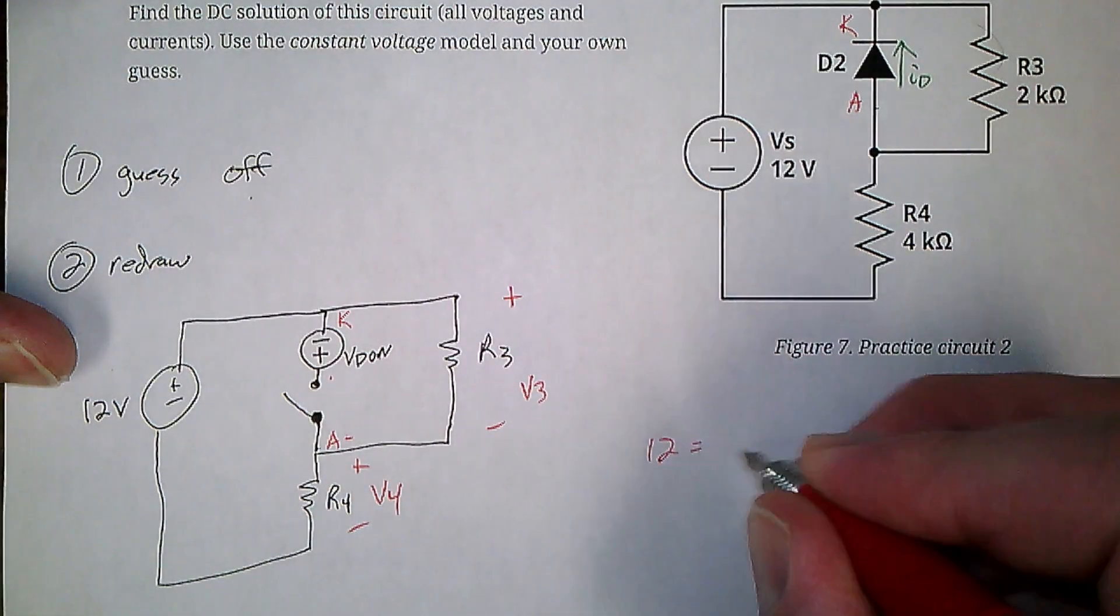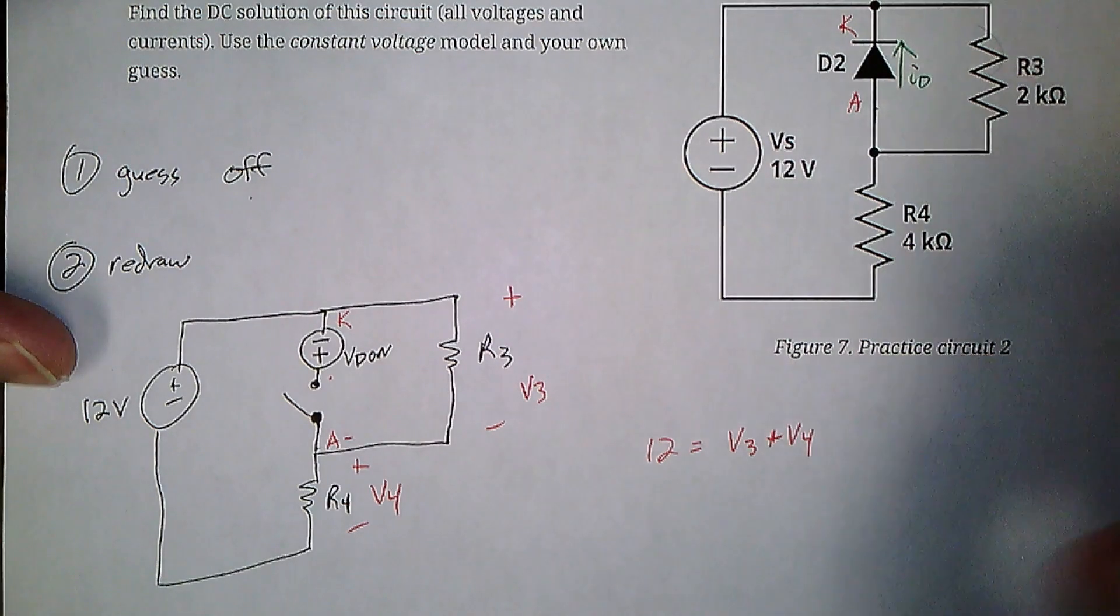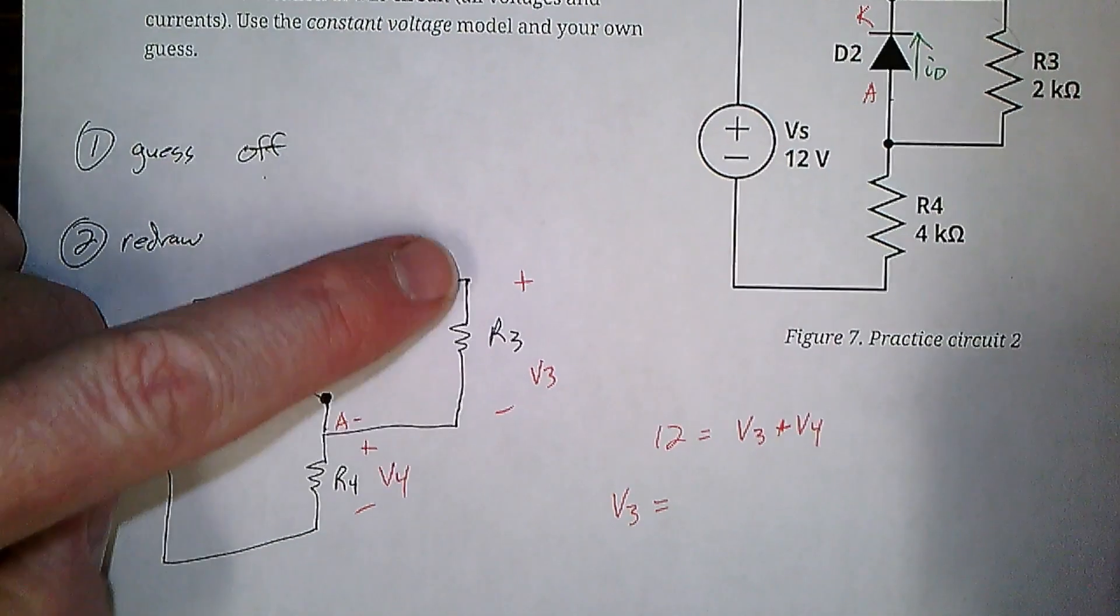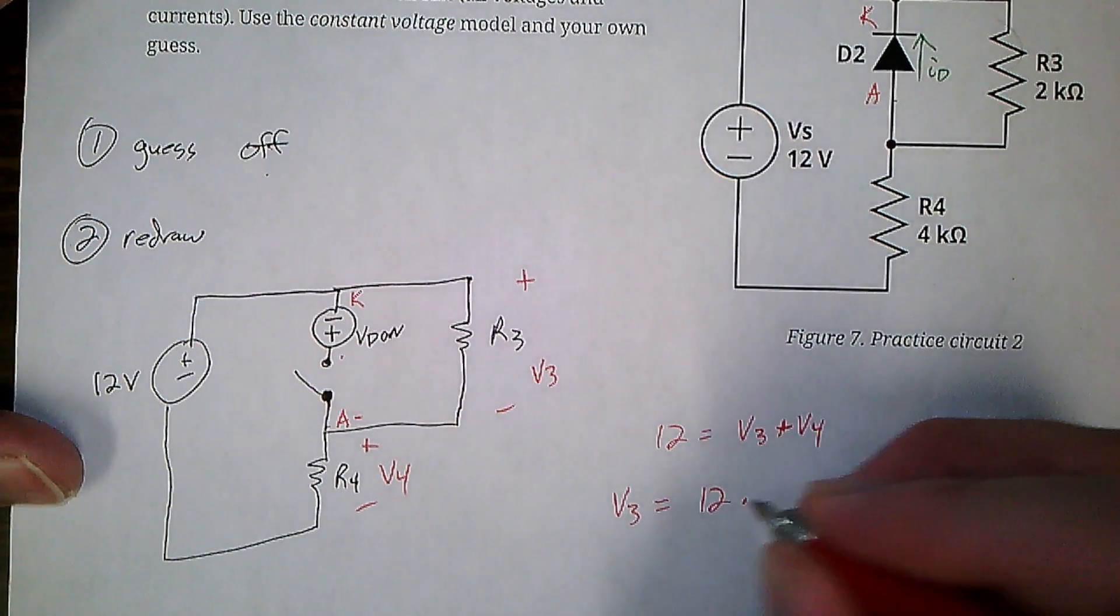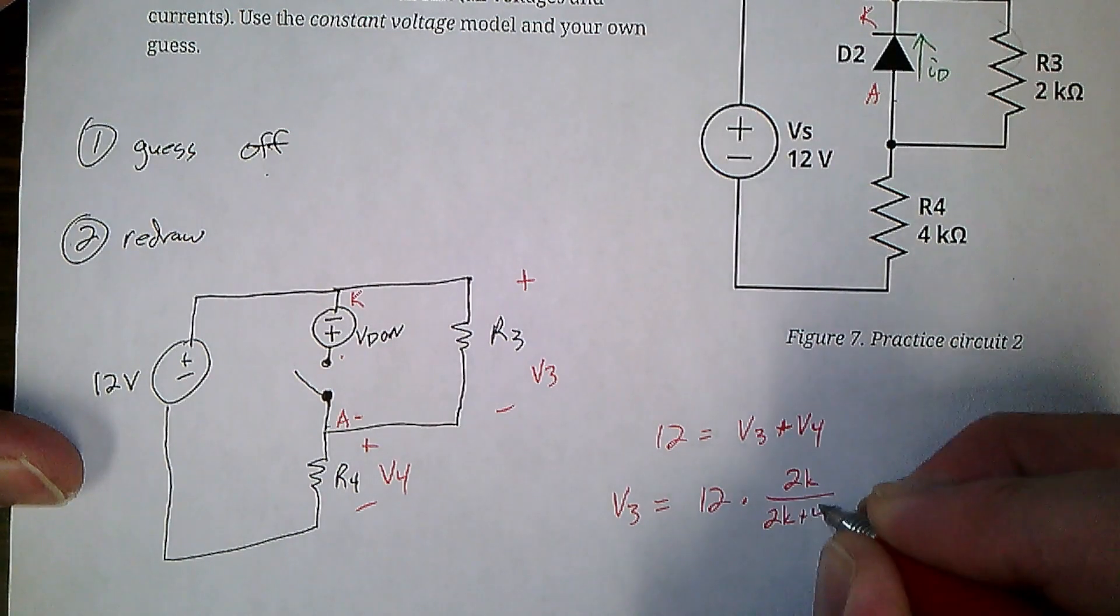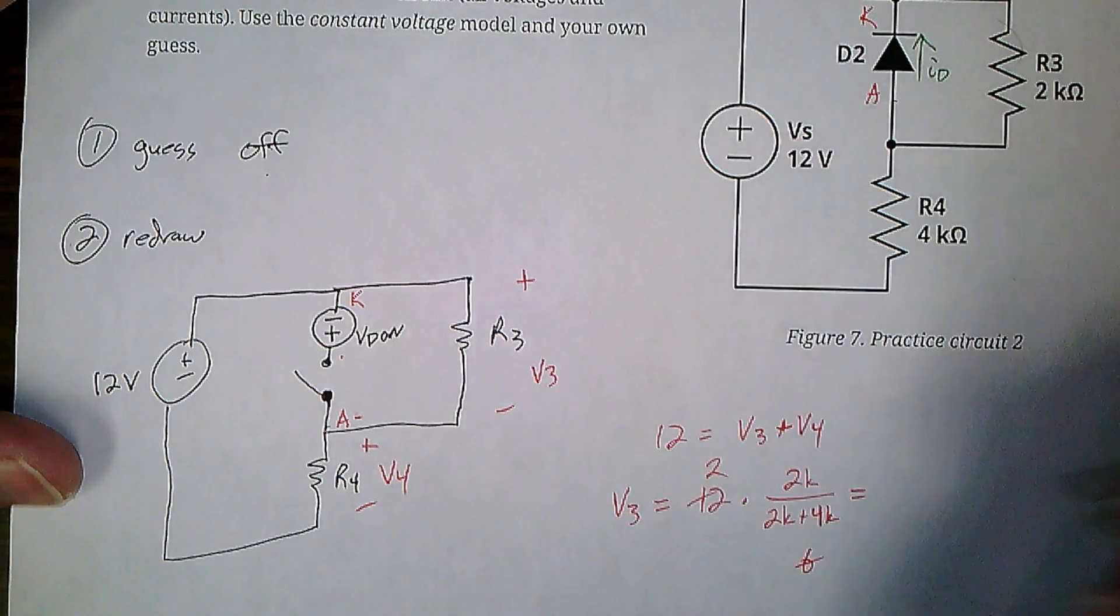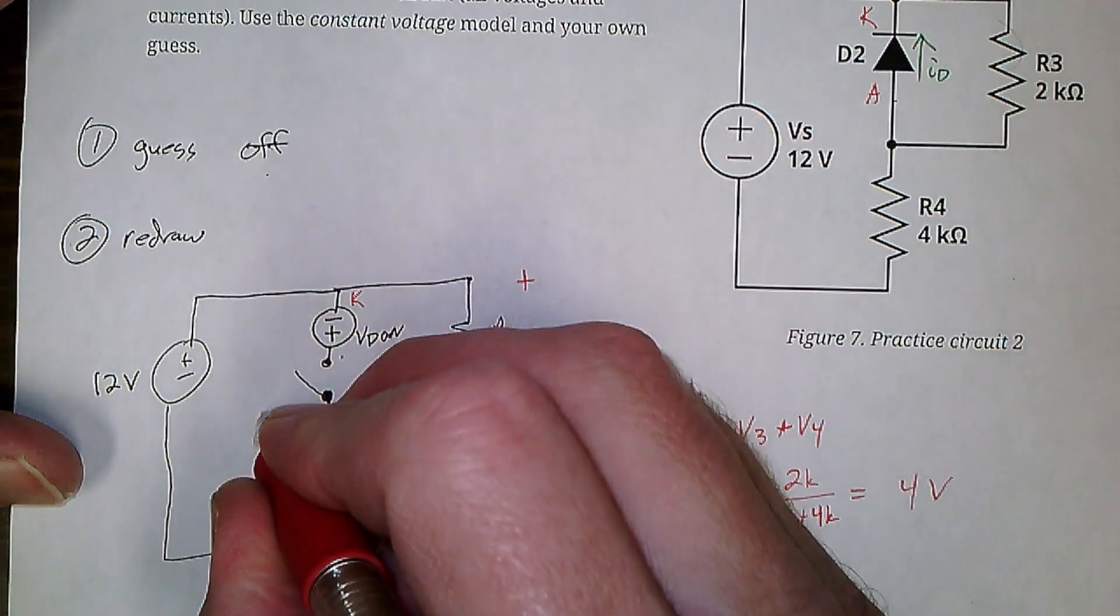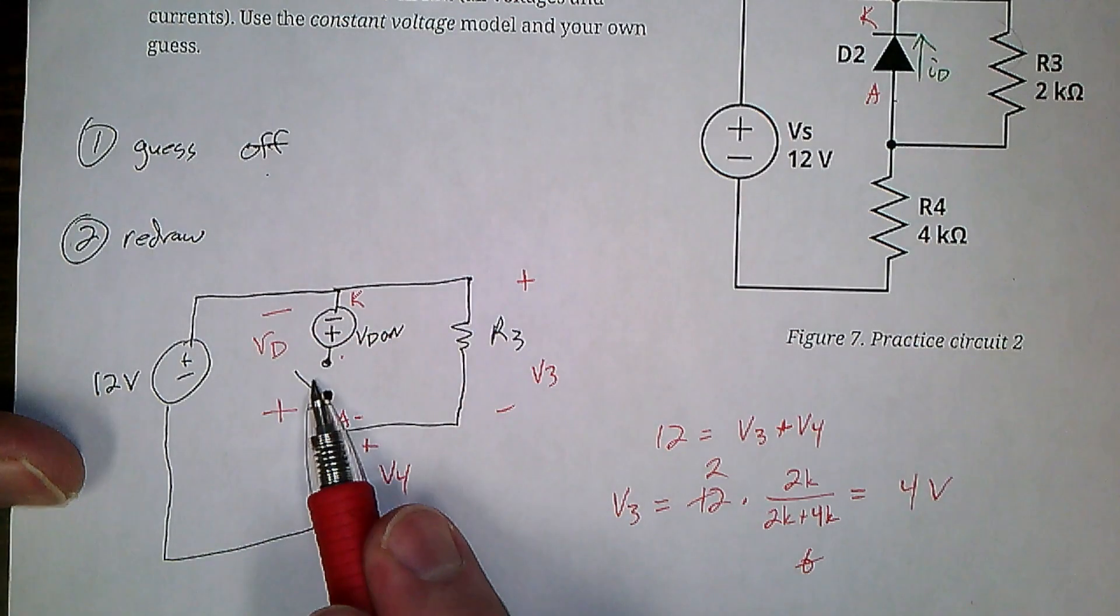So what do we do? KVL says 12 is V3 plus V4. This is V3. You see a voltage divider? No current through here, so this really is a pure voltage divider. V3 is 12 times 2K over 6K, which is 4 volts. Careful. The voltage across the diode is right there.